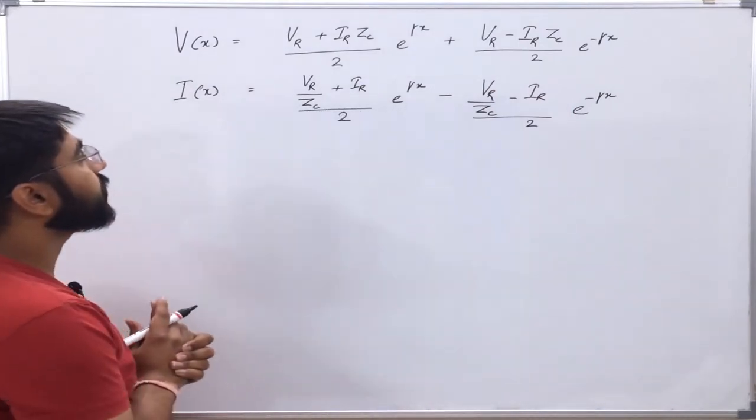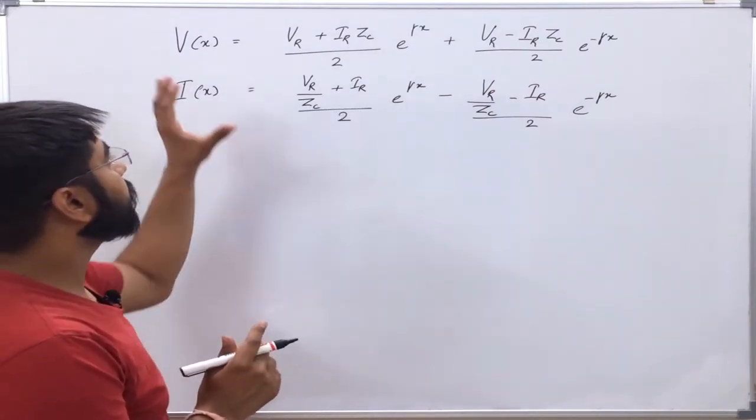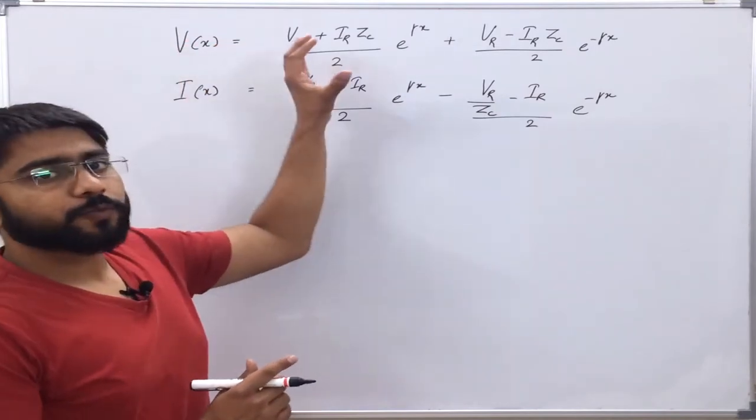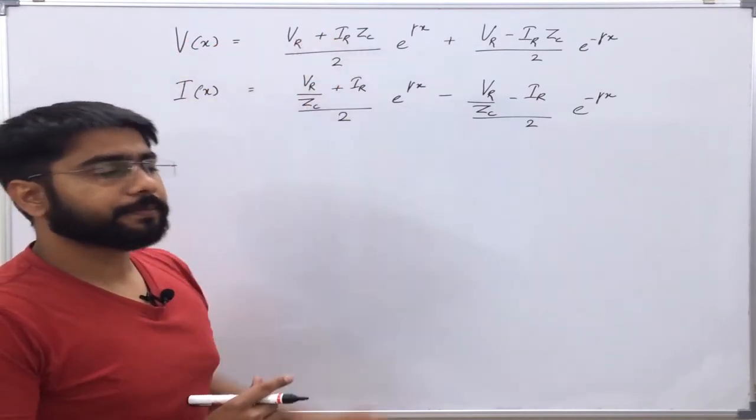Now let us see what happens to the voltage at various points of the line.